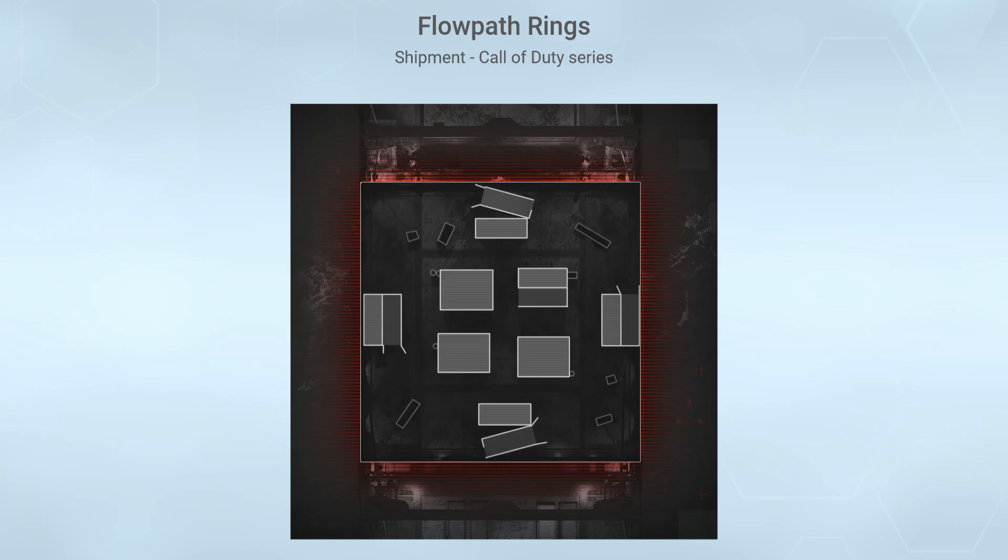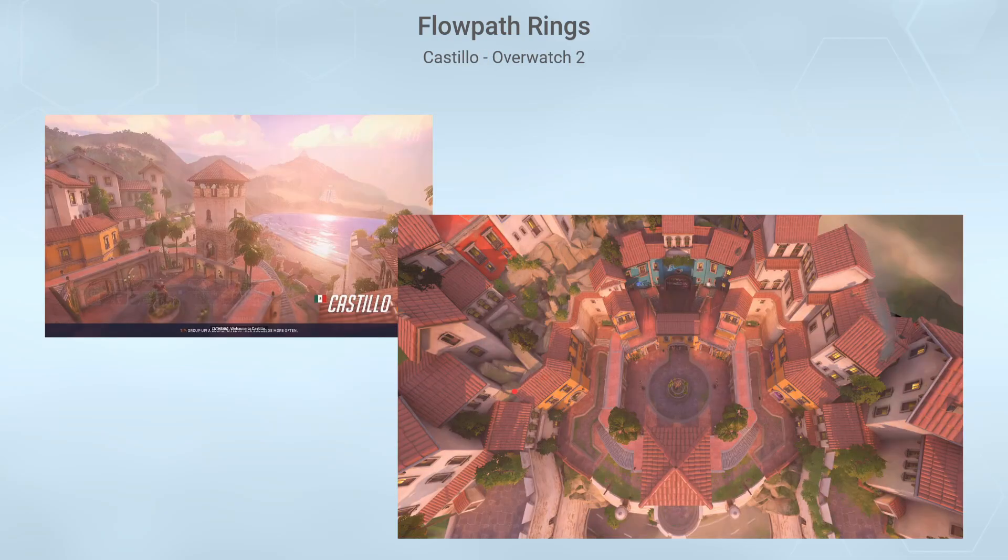So to make things a bit easier to understand, let's look at some examples from existing games and see how the flow path ring structure applies. Shipment from Call of Duty is probably pretty easy to understand as a visual example, so let's start with that. You can clearly see the main flow path ring loop here. We have these connecting side paths here and even have an additional side path here which creates a very simple nice flowing map.